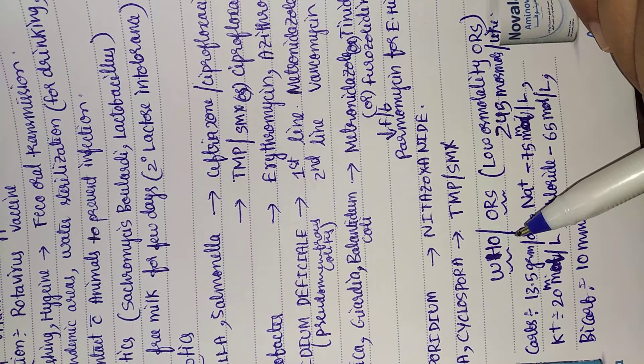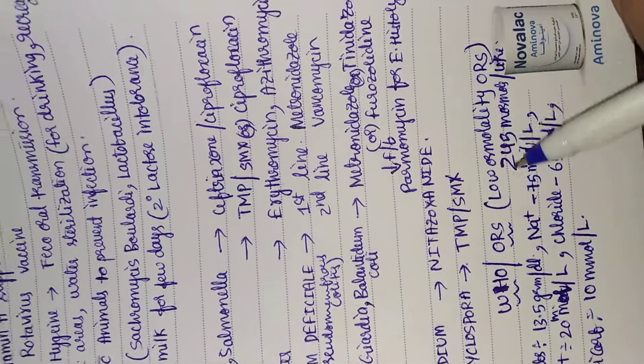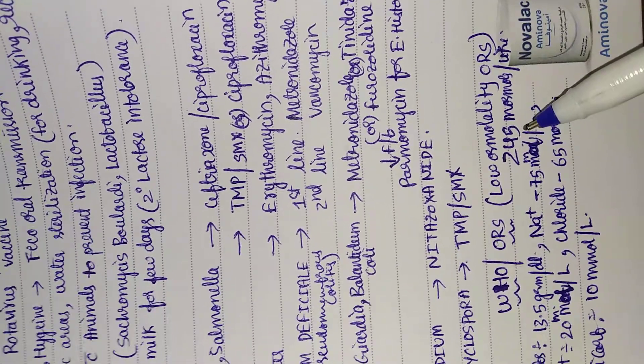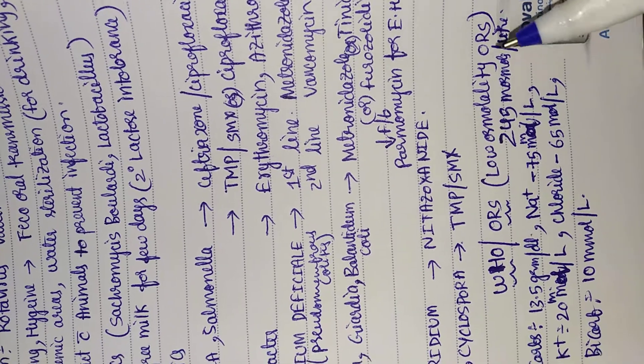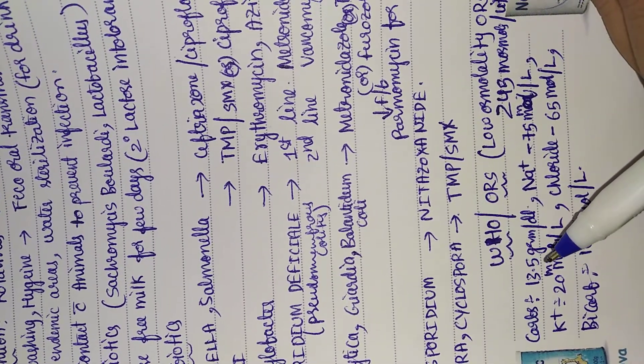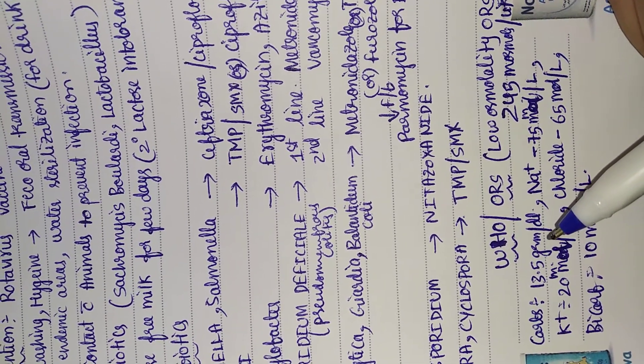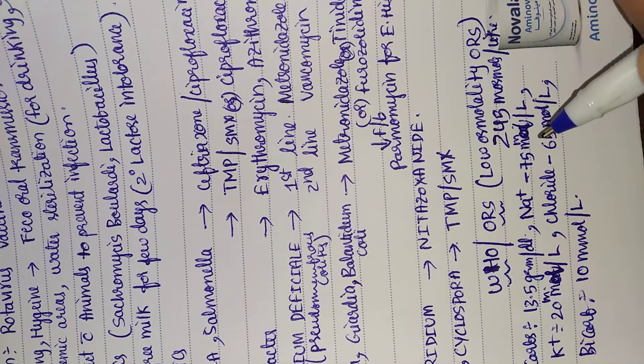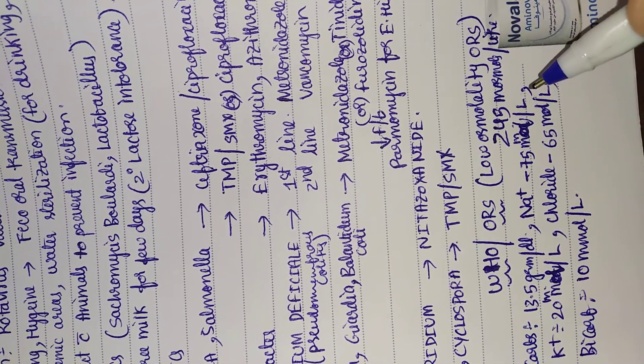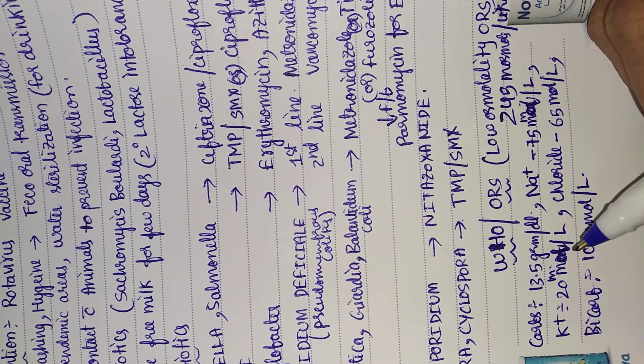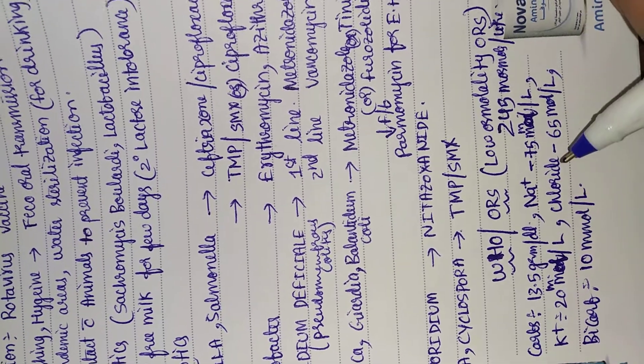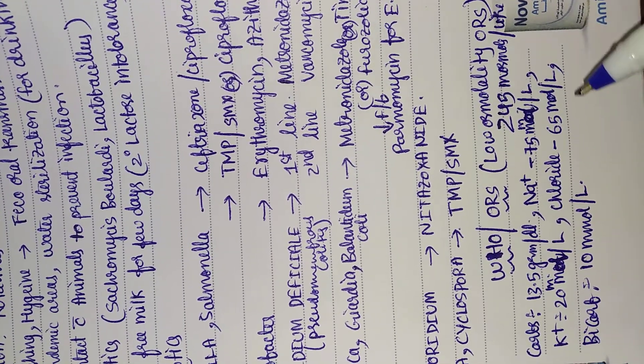I want to discuss about WHO ORS. What are its constituents? It's a low osmolality ORS with 245 milliosmol per liter. It has carbohydrates 13.5 grams per deciliter, sodium 75 millimoles per liter, potassium 20 millimoles per liter, chloride 65 millimoles per liter, bicarbonate 10 millimoles per liter.